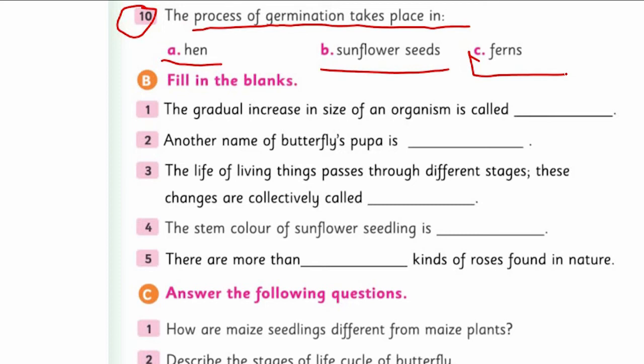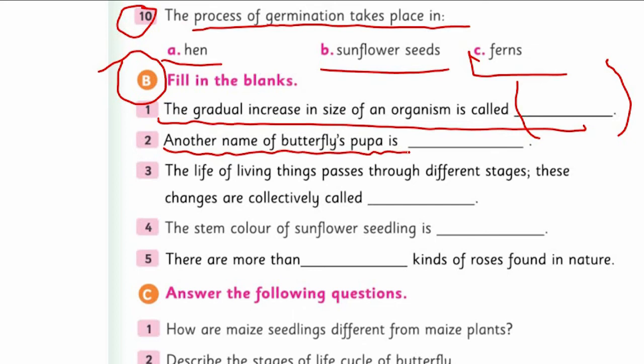Coming towards fill in the blanks - you need to put appropriate words that are correct and suitable to complete the sentence. Question one: The gradual increase in size of an organism is called what? We studied this in every life cycle - when organisms grow, what is this process called? Question two: Another name of butterfly's pupa. You saw two names each for larva and pupa. Question three: The life of living things passes through different stages. These changes are collectively called what? We studied this in detail as a cycle.